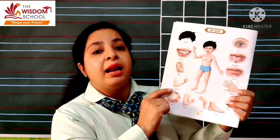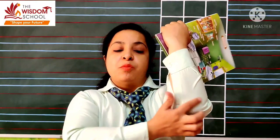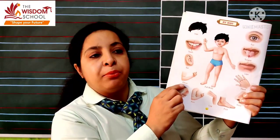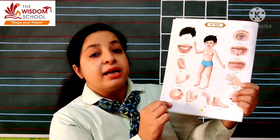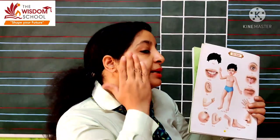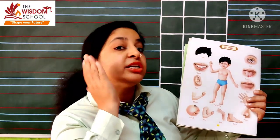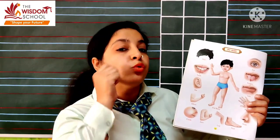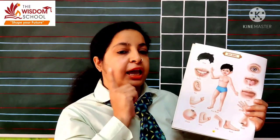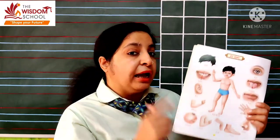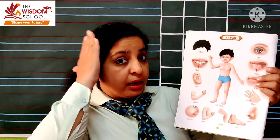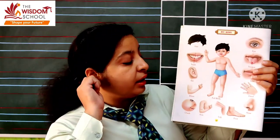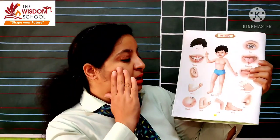Next hai humara elbow. Yeh hamari elbow hoti hai, is wale part ko bolte hain elbow. Yeh kya hai humara? Elbow. Bolo elbow. Next kya hai humara? Cheek. Yeh cheek hoti hai. Kya hoti hai yeh? Cheek — ispeh thappad na? Cheek. Toh ek baar inko phir se revise karo: Hair. Teeth. Ear. Elbow. Cheek.